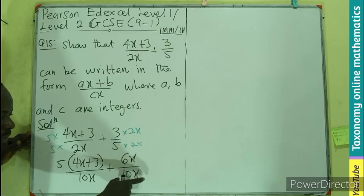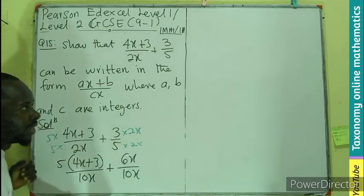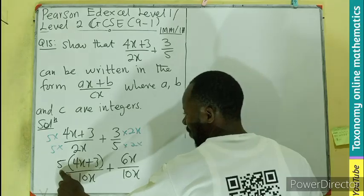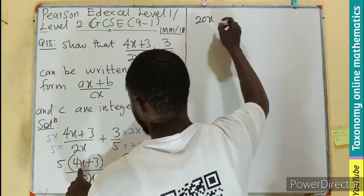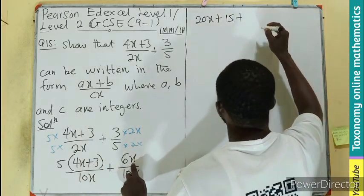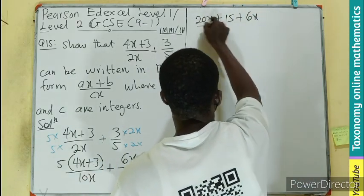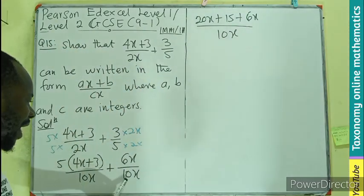So now we have the same denominator. We can add the numerators. 5 times 4x is 20x, 5 times 3 is 15, plus this numerator 6x, all divided by the common denominator which is 10x.